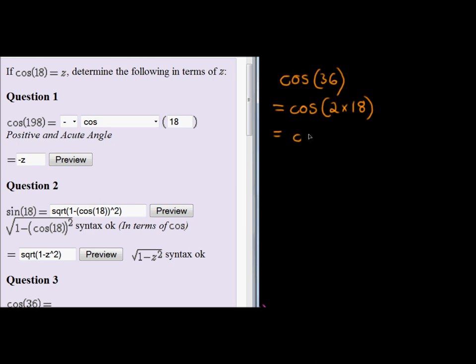That's a double angle. And for cos, that means we can either have it as cos squared 18 minus sin squared 18, or 2 cos squared 18 minus 1, or 1 minus 2 sin squared 18. So, the double angle formula for cos has three ways of expressing it.